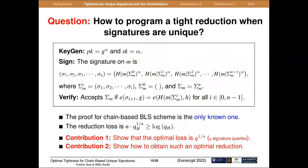Currently, there is only one method for proving tightness of unique signatures, which appeared in Crypto 2017, and its reduction loss is n times q^(1/n). The contribution of this work: we first show that the optimal loss is q^(1/n), where q is the number of signature queries. And we show how to obtain such an optimal reduction.